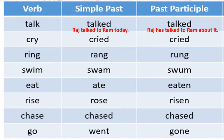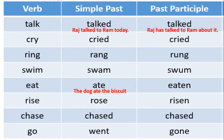One more example using 'eat' and 'ate.' Simple past: 'The dog ate the biscuit' — he has finished eating it. Past participle: 'The dog has eaten the biscuit' — here 'eaten' is the past participle. So some verbs change when they are in the past participle form, and these are examples of the verb with simple past as well as past participle.